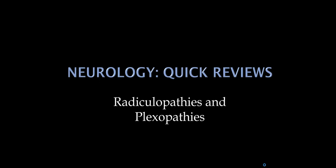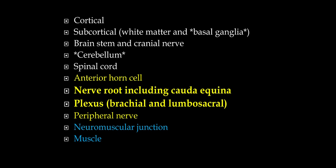Our next topic is a review of radiculopathies and plexopathies. These are meant to be quick reviews, so you may want to stop occasionally and review some of the anatomy as we go through this. We've been doing a quick review of the neuroaxis, covering muscle, neuromuscular junction, and peripheral nerve. In this lecture, we're going to lump together roots and plexus — radiculopathies and plexopathies.